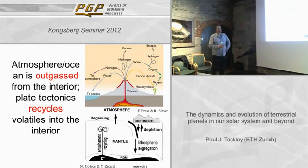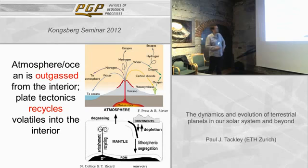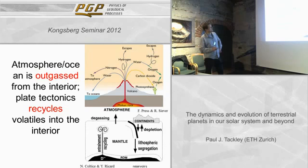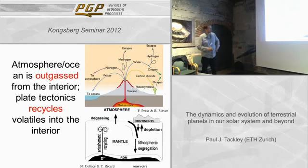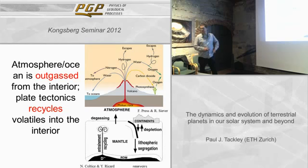An important point is that the atmosphere-ocean system and the interior are coupled, particularly over long time periods, because a lot of the constituents in the atmosphere are outgassed from the interior by volcanism — things like water, nitrogen, and carbon dioxide. And on some planets, particularly those with plate tectonics, the volatiles can be recycled into the interior. There's a long-term carbon cycle and long-term water cycle that cycles these things between the interior and the exterior.